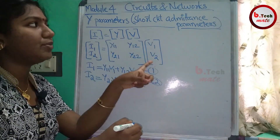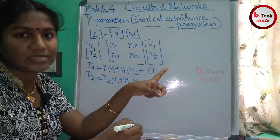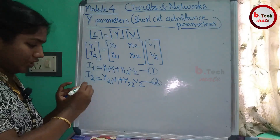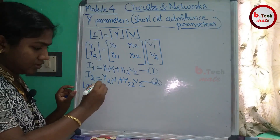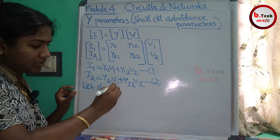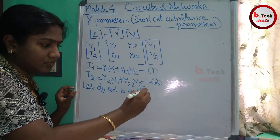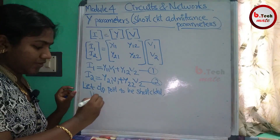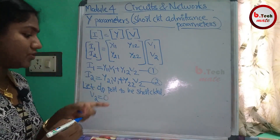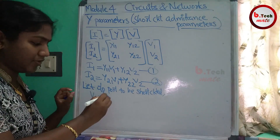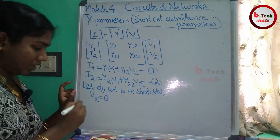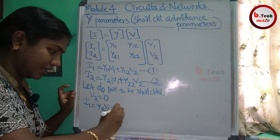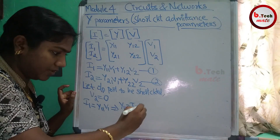This parameter is called short circuit admittance parameters. Let the output port be short circuit, so V2 equals 0. Substituting into the equations: I1 equals Y11·V1. Therefore, Y11 equals I1 by V1.